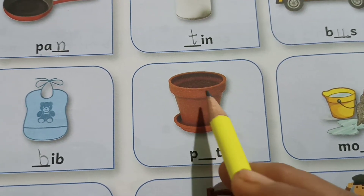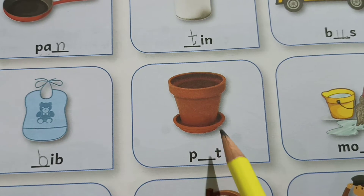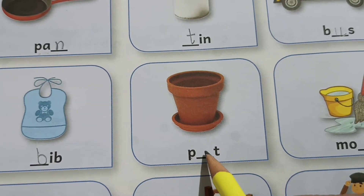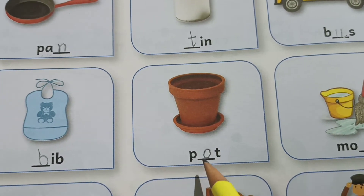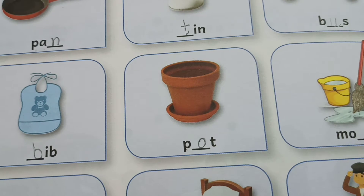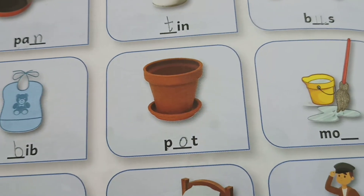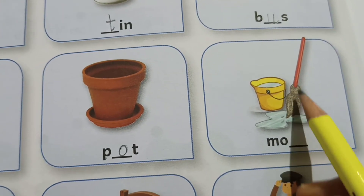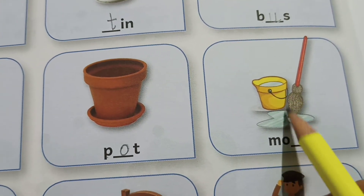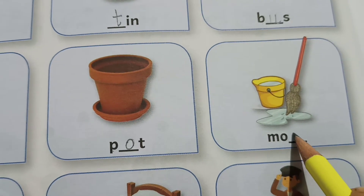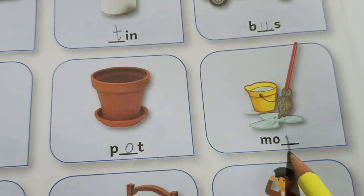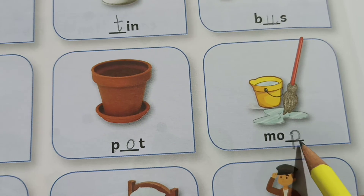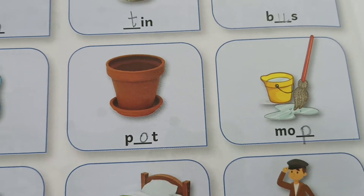Pot. What is it? Pot. P, o, t — pot. Mob. We have learned this in the phonic book. M, o, b — mob.